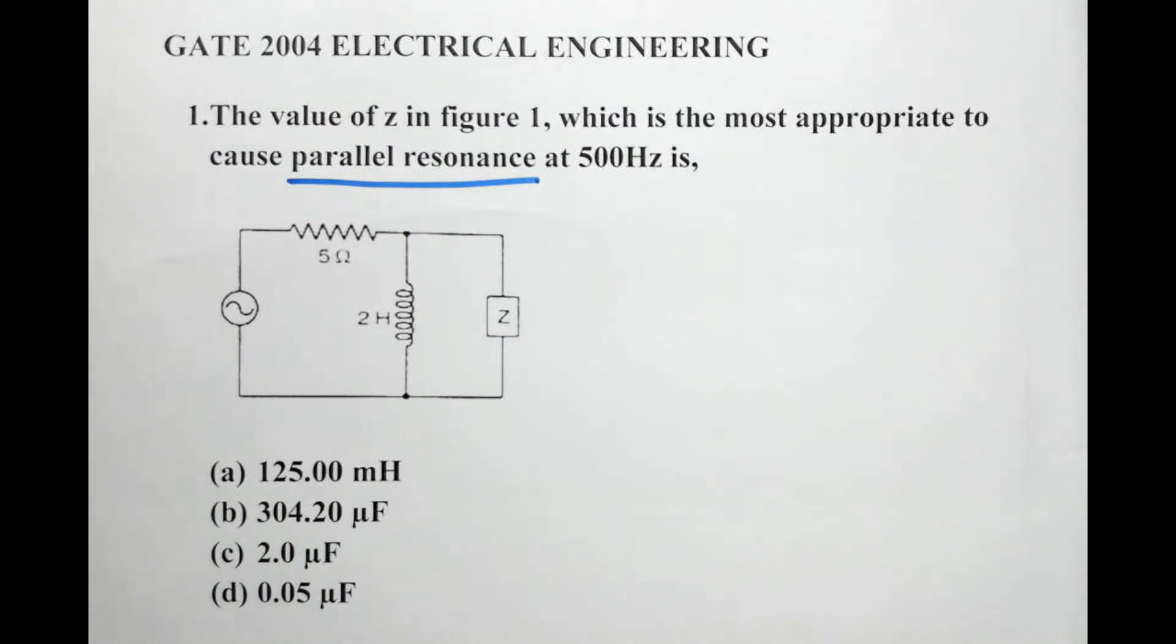And since it says parallel resonance, you should know what resonance is. Now at resonance what happens is that the admittance of a circuit is at its minimum, or in other words the impedance of a circuit is at its maximum.